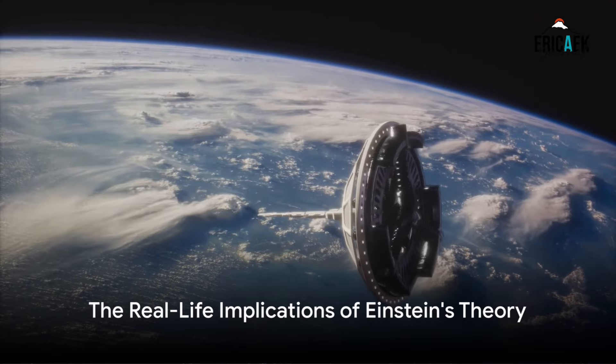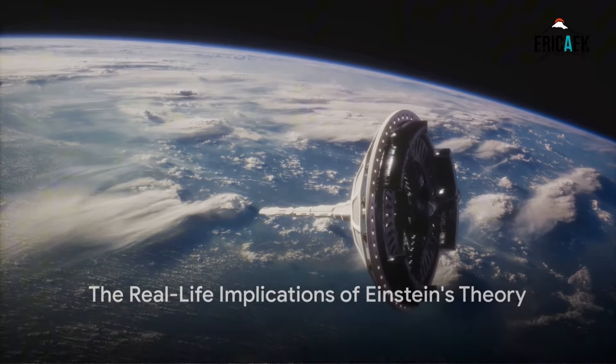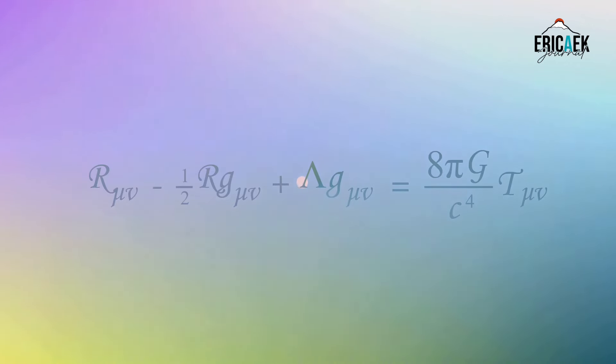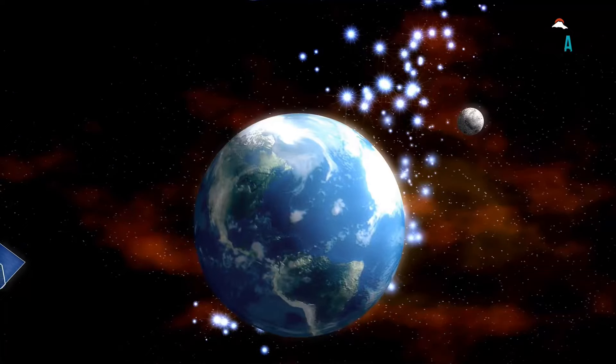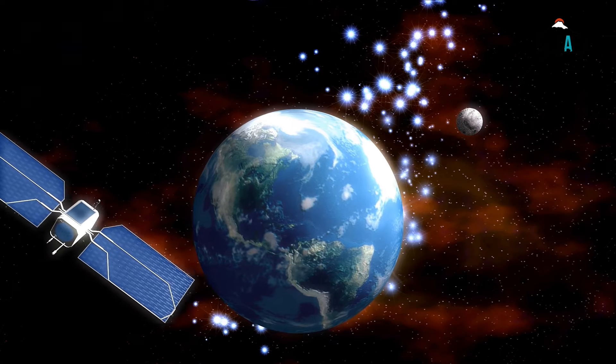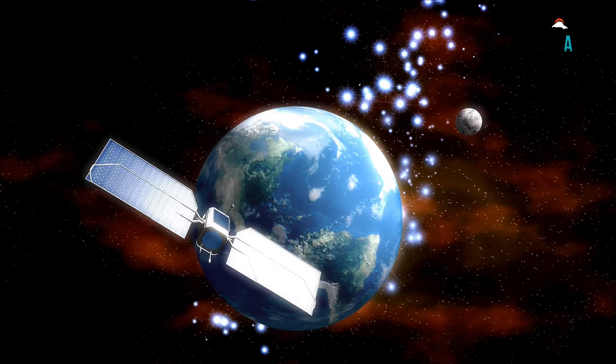You might be thinking, that's all very interesting, but what does it have to do with me? Well, Einstein's theory has some surprisingly practical implications. Let's take GPS technology as an example. Our global positioning system relies on satellites orbiting the Earth, constantly sending signals back and forth.